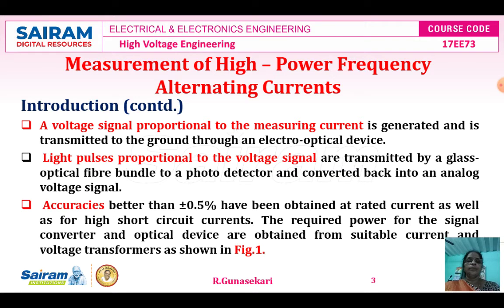The required power for the signal converter — signal converter means analog to digital and digital to analog — and the optical device are obtained from suitable current and voltage transformers, which is shown in figure 1.